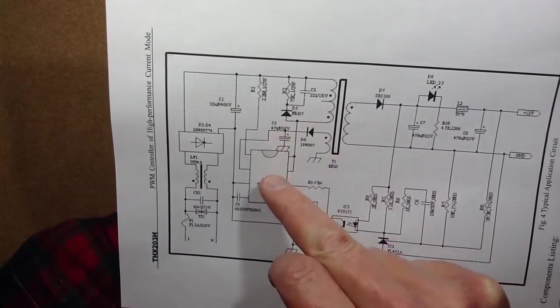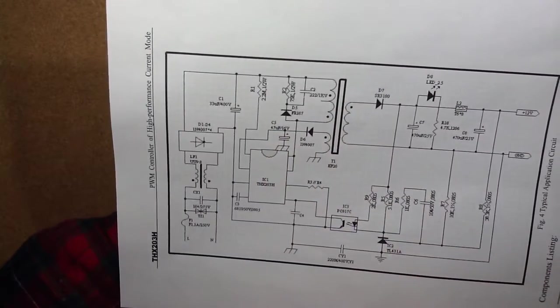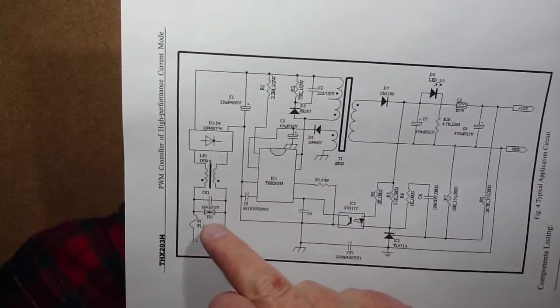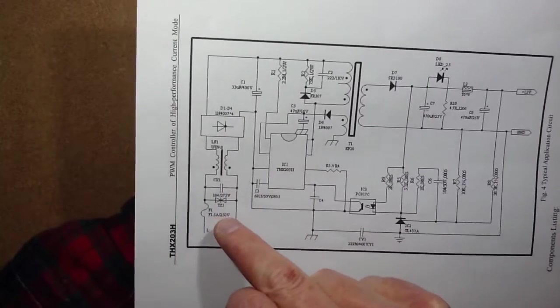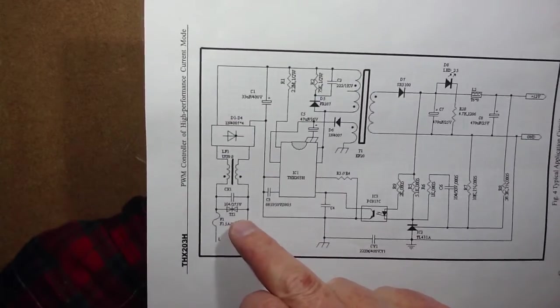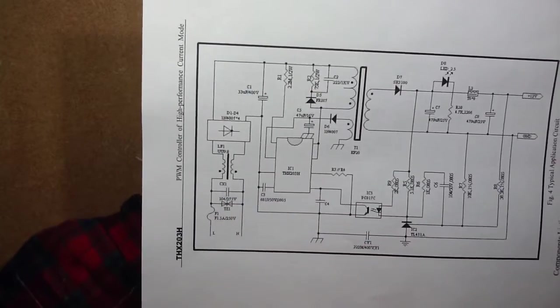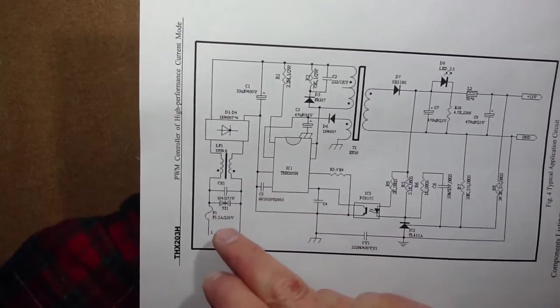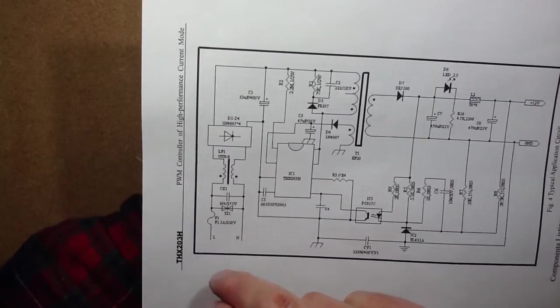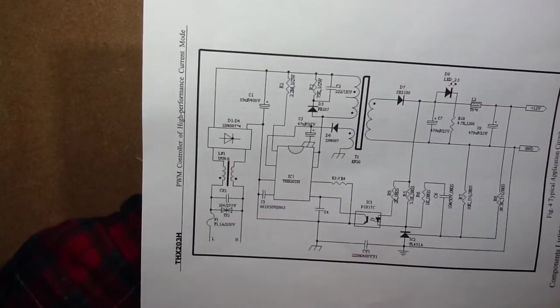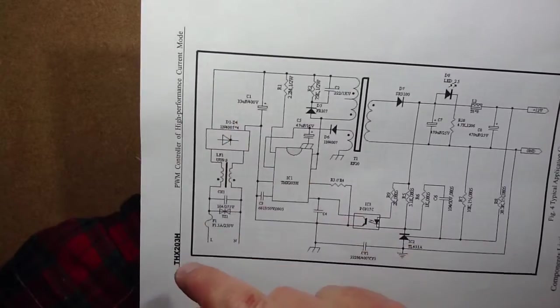Then that will then provide the supply for the chip. It shows quite extensive filtering on input. It shows what appears to be marked as a transorb. And a capacitor, a bi-directional transorb, so pretty much a metal oxide varistor, a voltage-dependent resistor. Then a common mode inductor, then the full bridge rectifier, and then 33 microfarads at 400 volts.